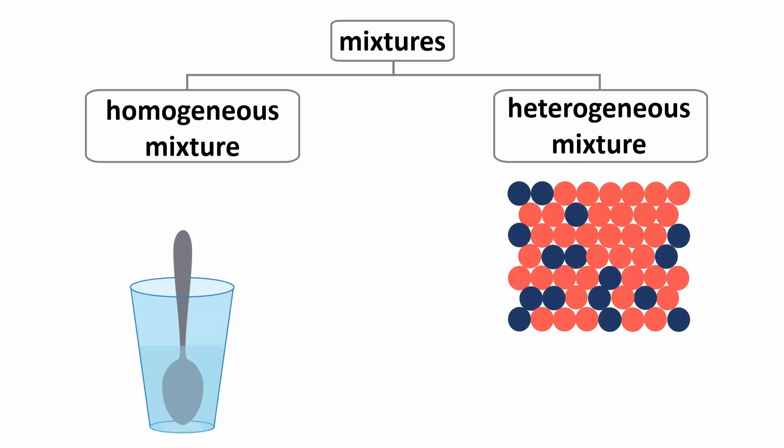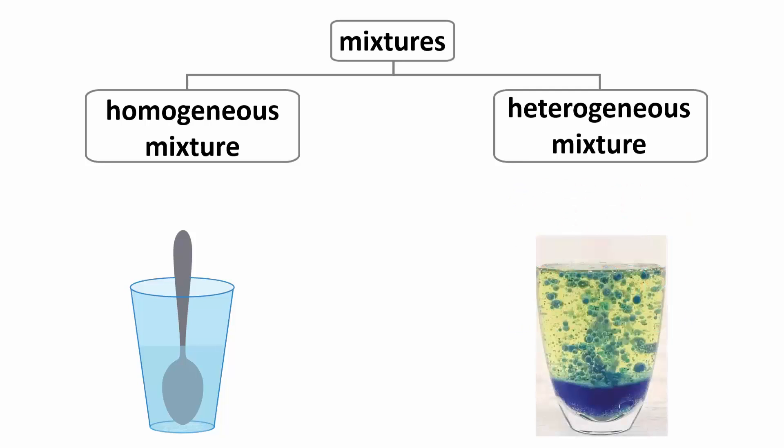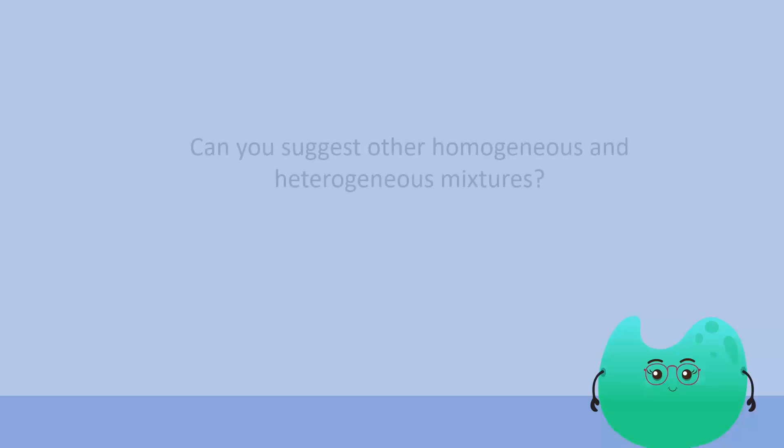A heterogeneous mixture does not have a consistent appearance and composition. For example, if you mix some oil in water and stir it well, some parts of this mixture may have oil in it and some may not. Can you suggest any other example of homogeneous and heterogeneous mixtures?